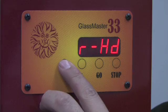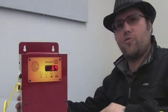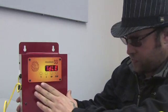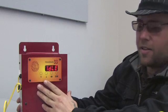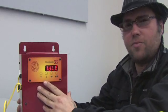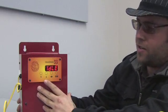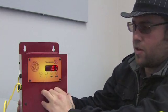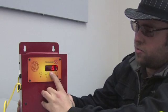The GlassMaster 33 is designed to be extremely easy to use. When it arrives from the factory, it's set for a set point setting to be 1050, and the rate to be full. So all you have to do to start working with the kiln is simply press go once.